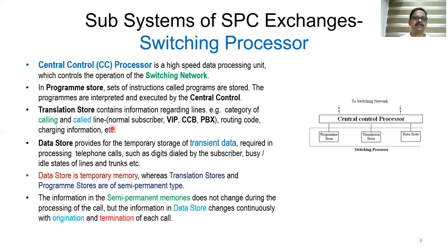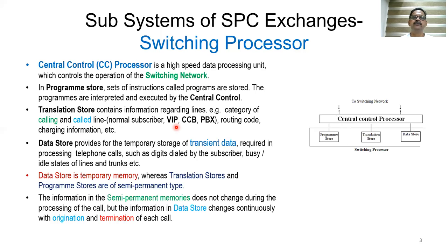The translation store contains information regarding lines — for example, category of calling and called lines, routing code, and charging information. Lines are categorized as normal subscribers, VIPs such as ministers, chief ministers, MPs, or MLAs, or top bureaucracy. Another category is coin collection boxes for payphones, and PBX — private branch exchange — used for internal communication of organizations like companies or colleges.